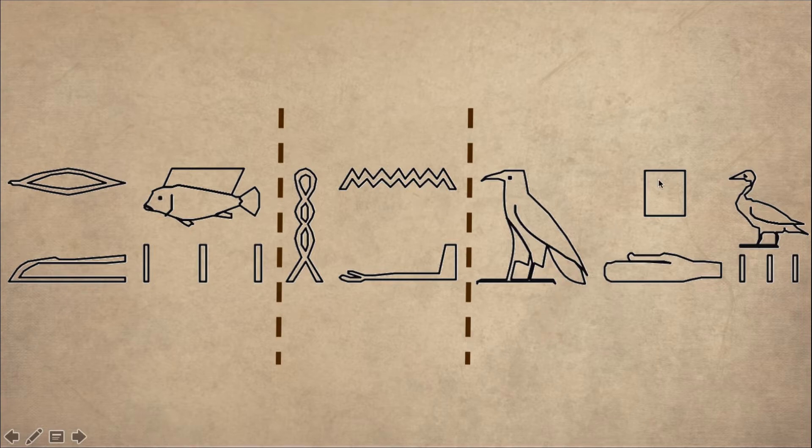Third word, A-P-D. Then three strokes, it means it's a plural. A-P-D is birds, and you have a determinative that suggests that we're talking about birds. We are talking about remou, hanh, a-p-d. Fish and bird.